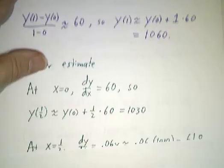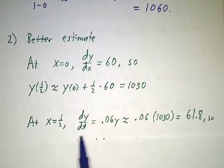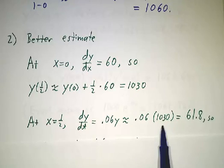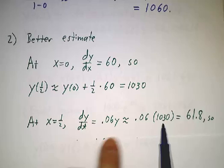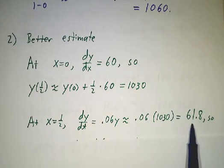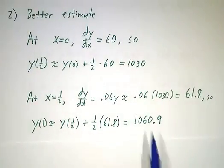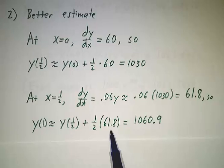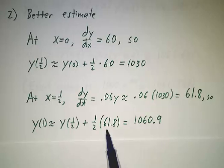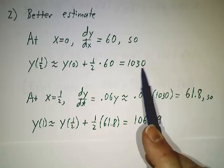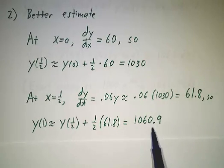And then we stop and reevaluate what the rate of change is then. When y gets up to 1030, dy/dt, which is 0.06y, has made it up to 61.8. So in the second half of the trajectory, you don't increase at rate 60, you increase at rate 61.8. So you gain half of 61.8, which is 30.9, add that to 1030, and you get 1060.9.